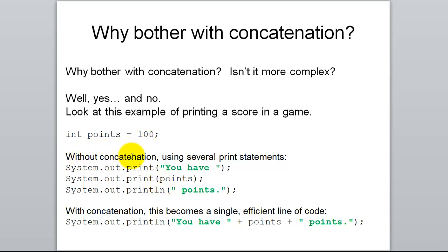Well, without concatenation, what you've learned so far is to do it like this. Print you have, then print the value of points, then print line points period and take it to the next line. So that's three lines of code just to print one sentence, you have 100 points.